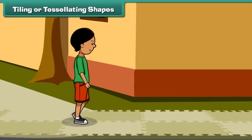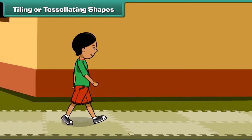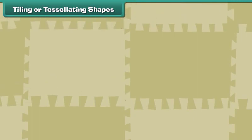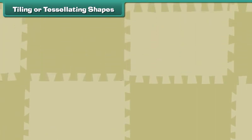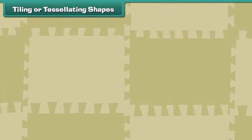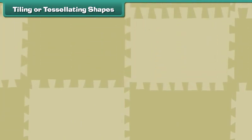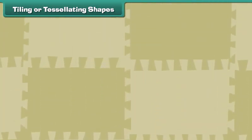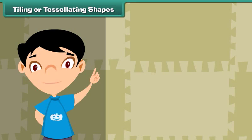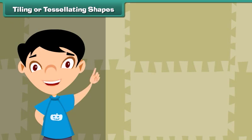Rajini is on her way to the pharmacy. She notices tiles of irregular shapes on the pavement and observes that the tiles have been fitted together without any gaps between them. Moreover, the tiles do not overlap. The tiles form a tessellation. A tessellation is a two-dimensional figure created through the repeated use of a geometric shape in such a way that there are no gaps or overlaps.